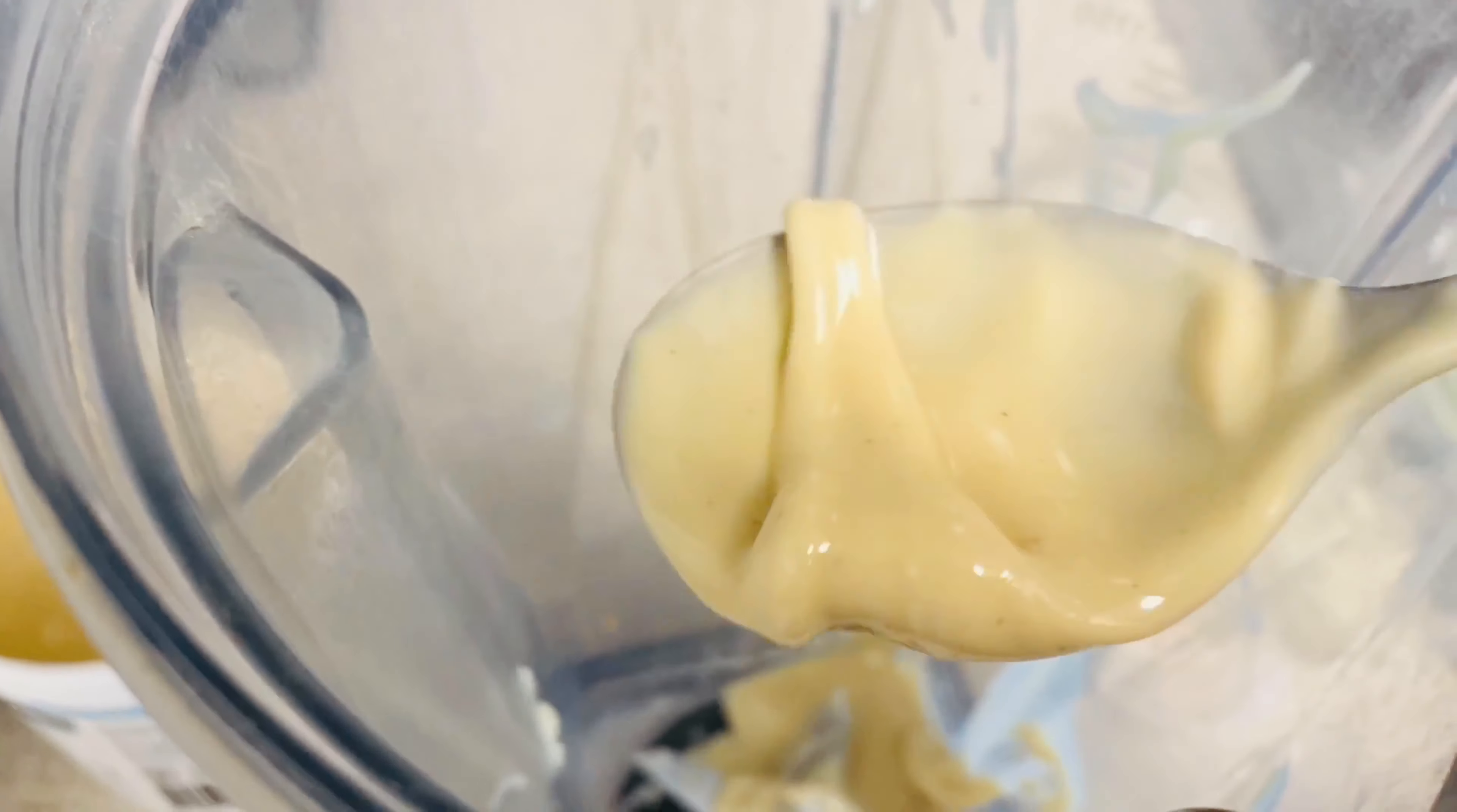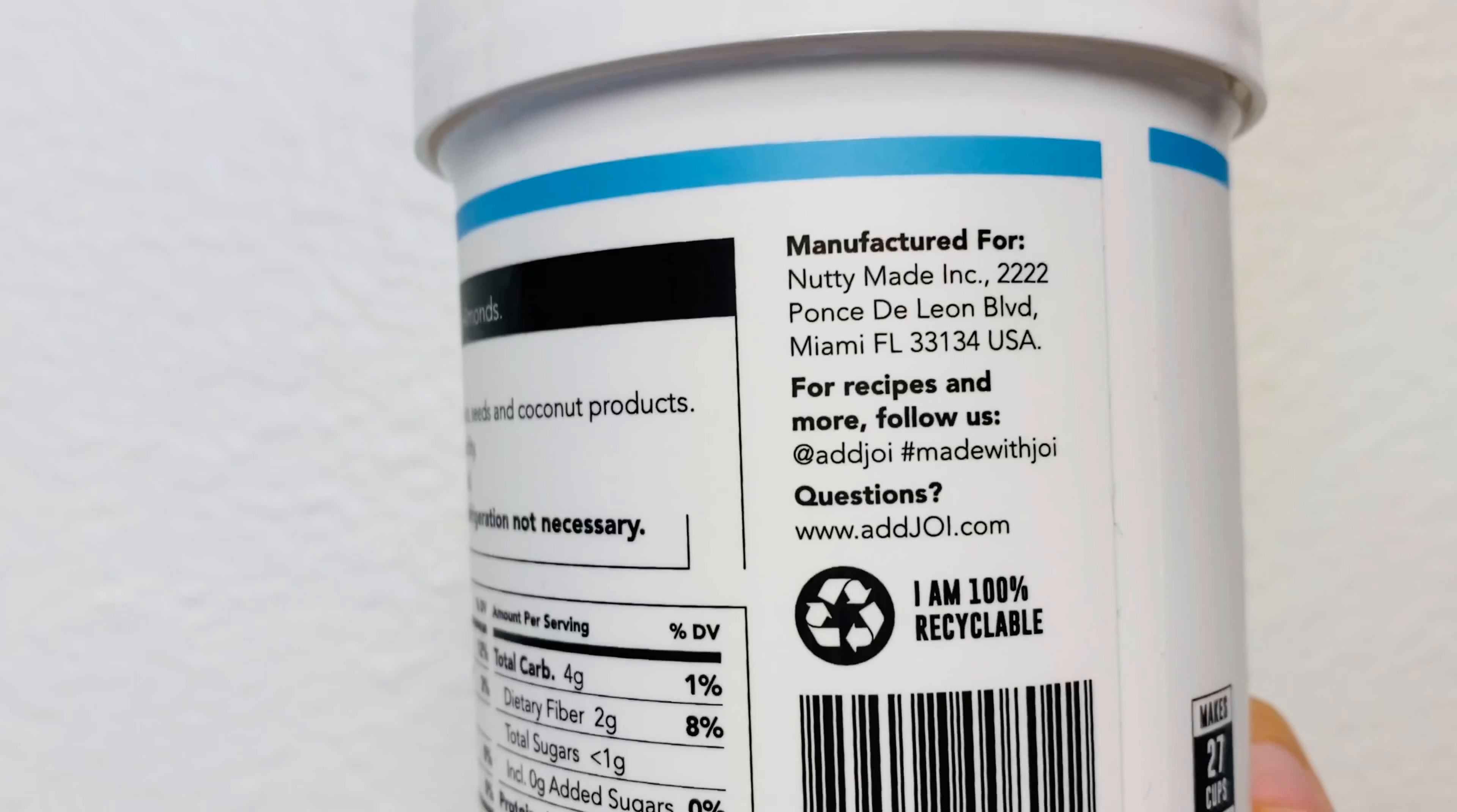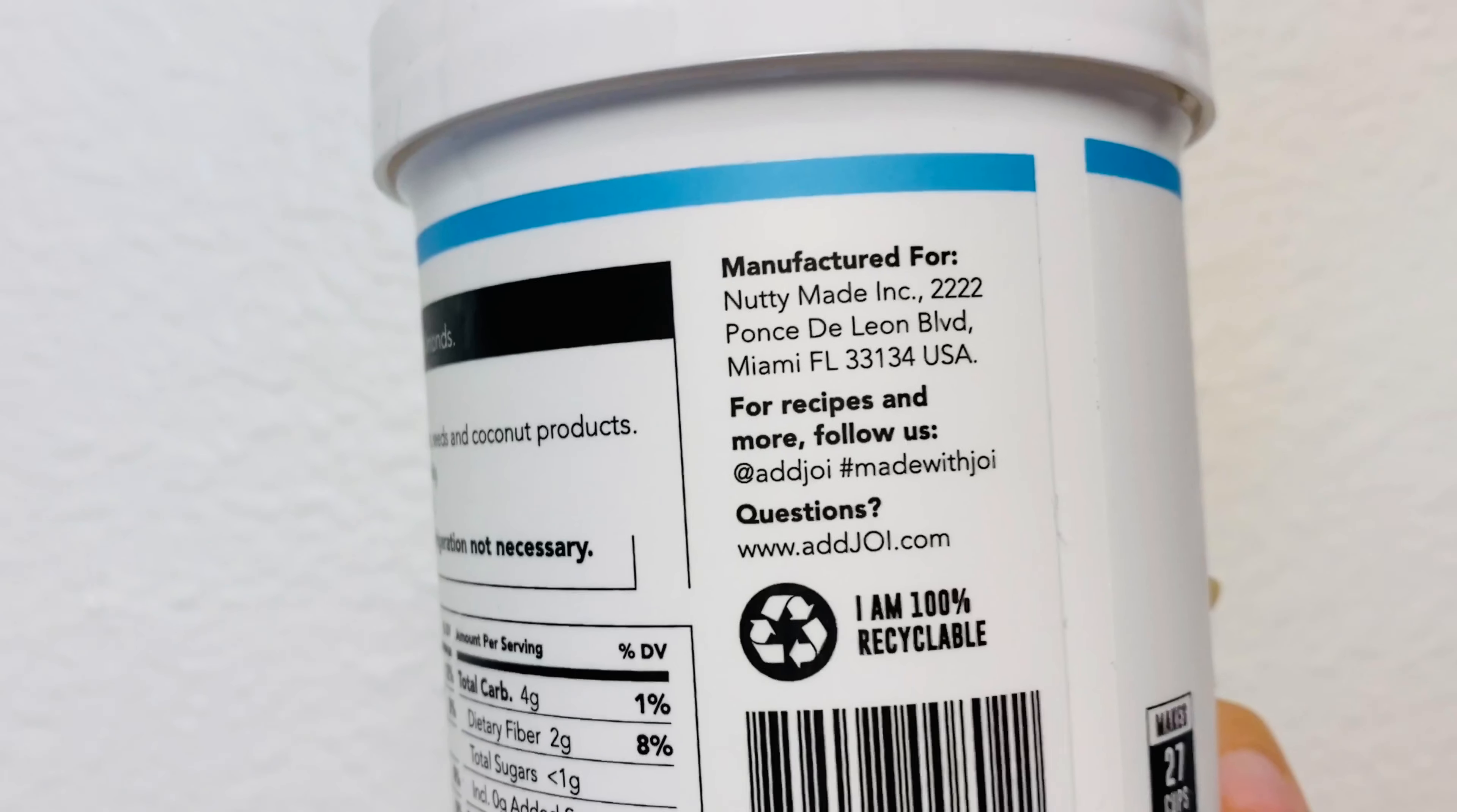The almond nut base itself does not need to be refrigerated, which is so convenient and great, especially during these lockdown periods. You simply add water—about a cup or so to every one to two tablespoons of the nut base—depending on how thick and creamy you want it, and conveniently just make it.